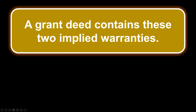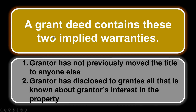A grant deed contains two implied warranties. Remember, quit claim deeds don't have implied or expressed warranties, but a grant deed does. The first is that the grantor has not previously conveyed the title to anyone else — they haven't sold and conveyed the property to someone else. The second is that the grantor has disclosed to the grantee all that is known about the grantor's interest in the property. These are the two implied warranties of a grant deed.